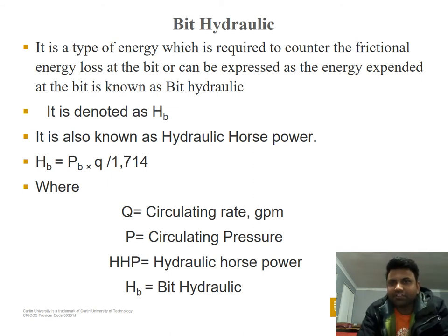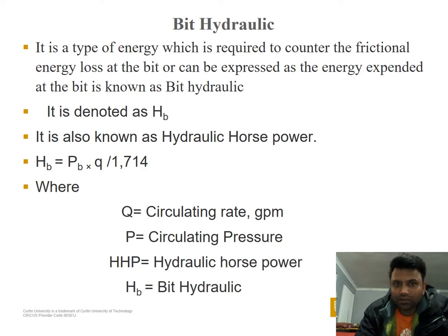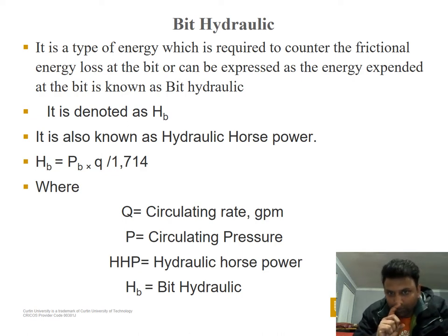Bit hydraulics is a type of energy required to counter the frictional energy loss at the bit. It can be expressed as energy expended at the bit, known as bit hydraulics, and is denoted as H subscript B. It is also known as hydraulic horsepower.